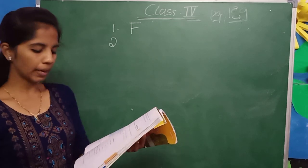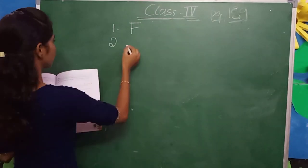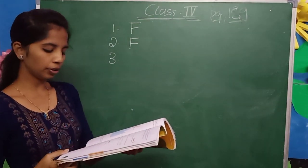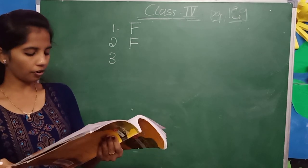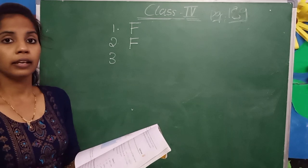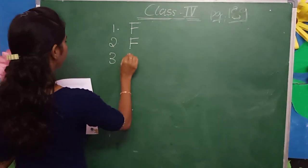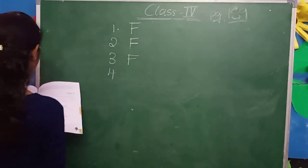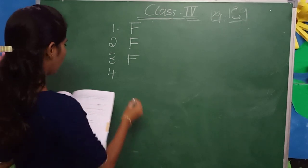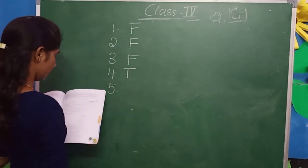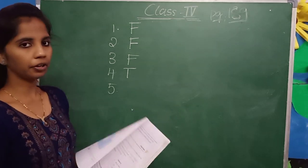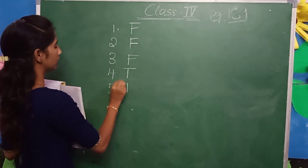Minerals are available to us in unlimited quantity. Is it right or wrong? Wrong. Minerals are available to us in limited quantity, so write false. India is rich in mineral resources. Yes, so write true. Petroleum is found in Gujarat and Maharashtra. Is it correct or wrong? Yes, it is correct, so write true.